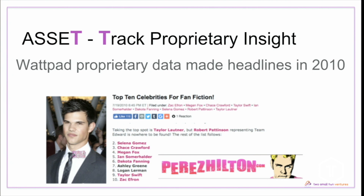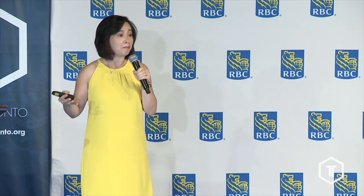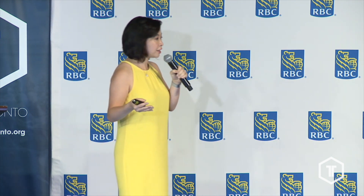Once you have gone through A-S-S-E, the last letter is T — and that's to track your proprietary insight. Wattpad made headlines on PerezHilton.com in 2010 with a proprietary data set. There's a feature on Wattpad called 'casting' — it allows writers to put together their dream cast for their stories as if they were made into movies. Some writers would cast Harry Styles as a vampire and Taylor Swift as the vampire slayer. One day I decided to look into that data set to see who the popular celebrities being cast on Wattpad were — and the top 10 list reflected pop culture at the time, eventually making headlines on PerezHilton.com.